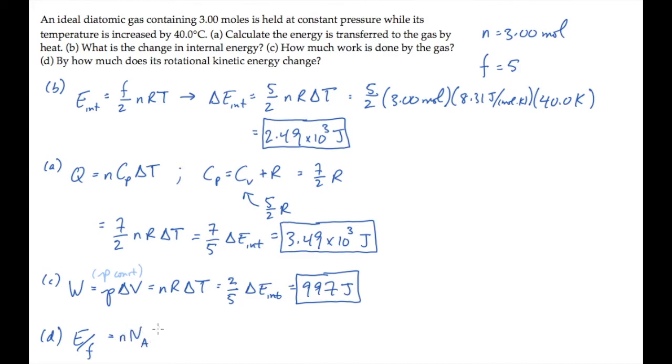we have the number of moles times Avogadro's number, 1/2 kT, per degree of freedom. If we substitute Boltzmann's constant equals R over Avogadro's number and take the two rotational degrees of freedom,